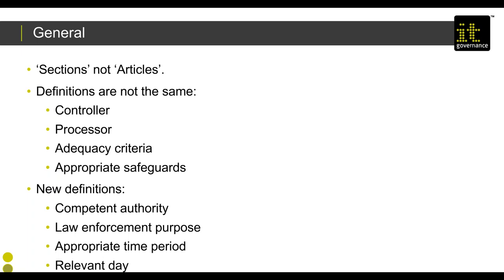There are lots of definitions we can't cover here — you need to read the legislation to understand the differences. New definitions include that of 'competent authority.' Part 3 applies to competent authorities listed at Schedule 7 processing personal data for a law enforcement purpose. Also within Part 3, when answering data subject requests — subject access requests, erasure, restriction, rectification — we still work through the one-month period familiar from GDPR, but the legislation defines the 'relevant day' from which it starts.